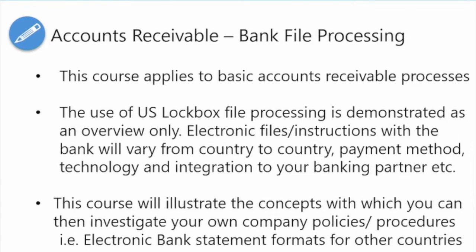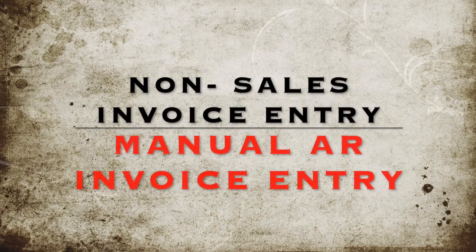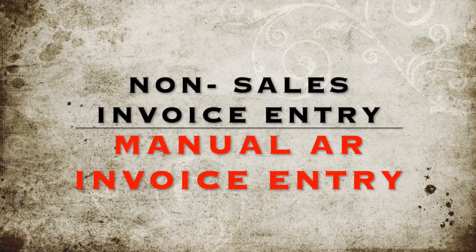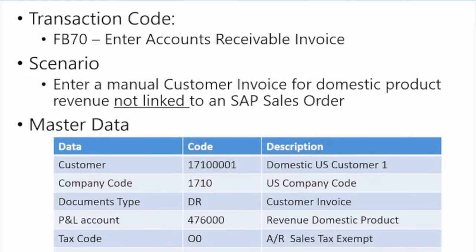So with that, let's get on with the course. For this first lesson, we're going to cover entering a manual invoice — what I'm calling a non-sales order AR invoice. The transaction code here is FB70, and this is to create these invoices standalone, with no reference to any logistics or sales order document. The scenario here is you've got a manual invoice to enter for domestic product revenue, no link to a sales order — that's the main clue here.